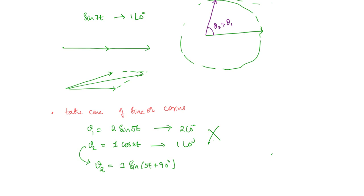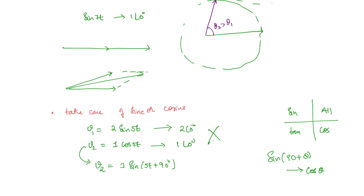So sin(90° + θ): if you don't remember the conversion, whenever there is 90°, sine becomes cosine and cosine becomes sine. Now, 90° + θ will lie in the second quadrant. In the second quadrant, sine is positive, so we take the positive sign. That is how cos 5t = sin(5t + 90°). Then the new phasor for v2 is 1 ∠ 90°. This is the correct expression.